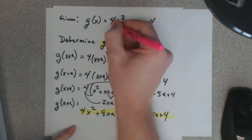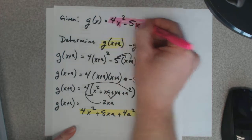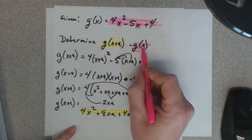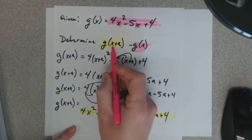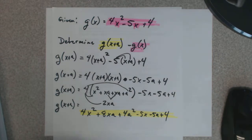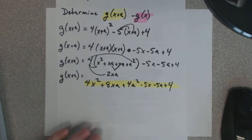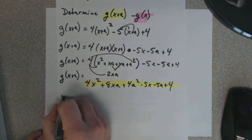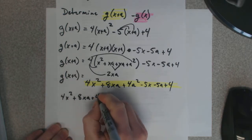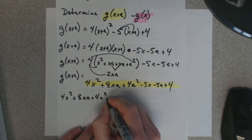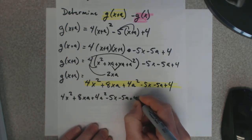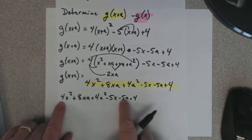And g of x, well, I know what g of x is. Right here it is. That's g of x. So, I replace this right here. And for this guy, I put this big long thing in. So, g of x plus a is 4x squared plus 8xa plus 4a squared minus 5x minus 5a plus 4.